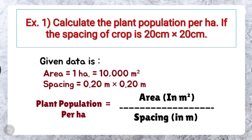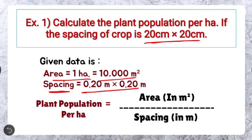Here is example number 1. Calculate the plant population per hectare if the spacing of crop is 20 cm × 20 cm. Now we are solving this numerical. The given data is: area is 1 hectare, which equals 10,000 meter square. Here we have to convert spacing into meter — it will be 0.20 meter × 0.20 meter.